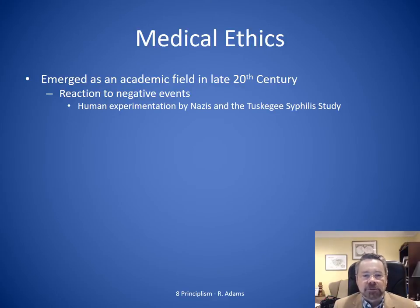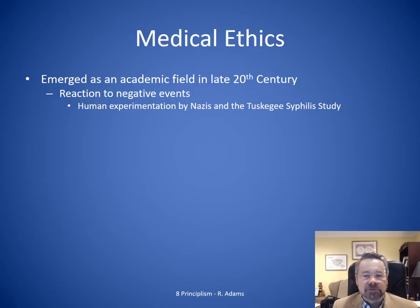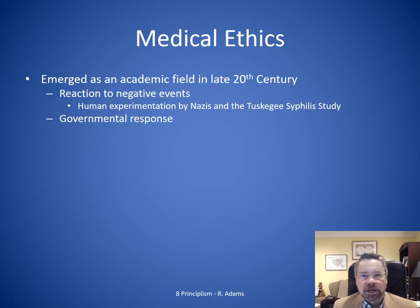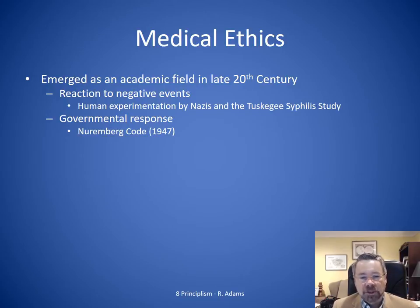There were human experimentation issues in Germany, in Japan, in China, and in our own country — in Tuskegee, where syphilis studies were carried out. The governmental response to this was to enact a number of declarations or codes. The first and well-known of them was the Nuremberg Code, which resulted from World War II and the atrocities in that war.